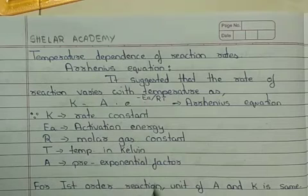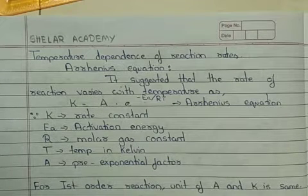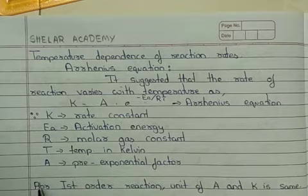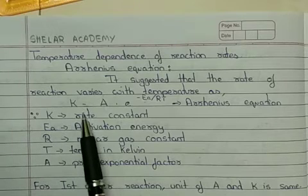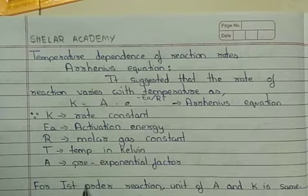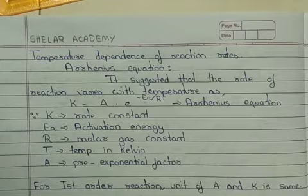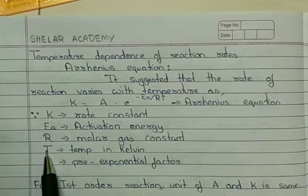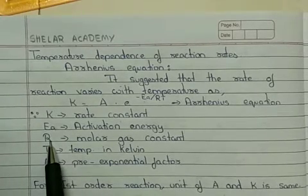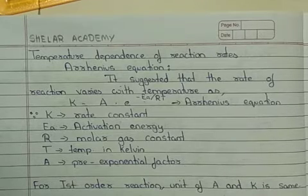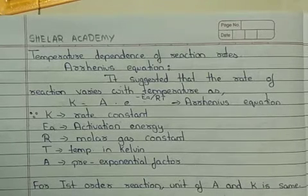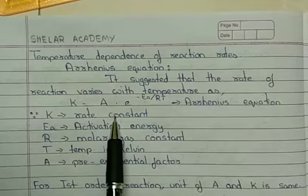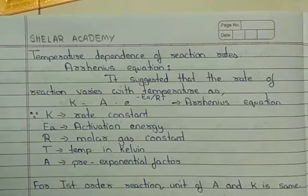Regarding the units in the Arrhenius equation: T, being absolute temperature, will be in Kelvin. The frequency factor or pre-exponential factor A has the same units as the rate constant, especially when the reaction is of first order. The units of Ea (activation energy) and the molar gas constant R must be the same, generally in joules per Kelvin per mole or kilojoules per Kelvin per mole. This is one form of the Arrhenius equation relating rate to temperature.